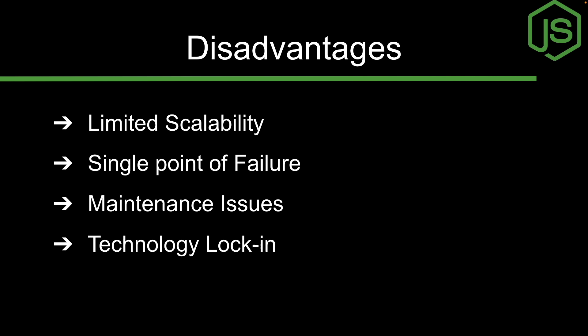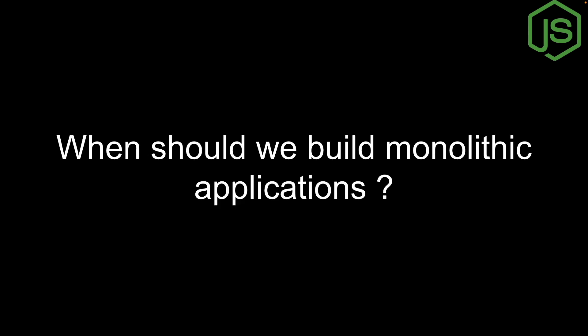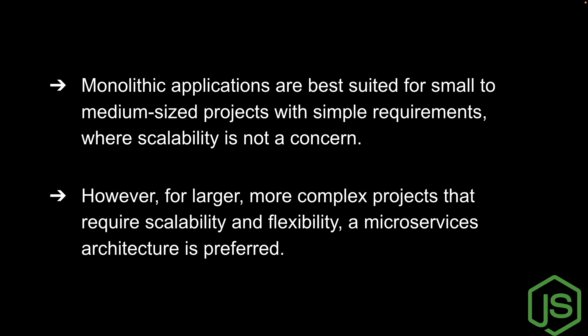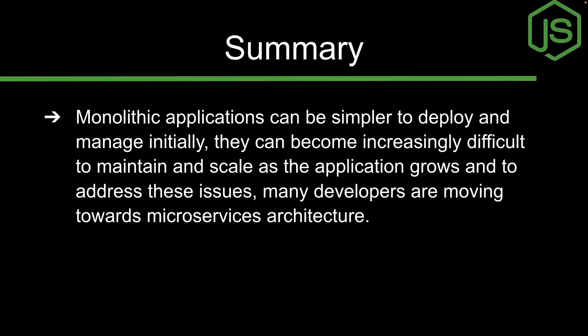The last challenge is technology lock-in — monolithic applications are typically built using a specific technology stack, making it difficult to switch technologies as the application grows. As a rule of thumb, monolithic applications are best suited for small and medium-sized projects with simple requirements where scalability is not a concern. For large and complex projects requiring scalability and flexibility, a microservices architecture is preferred.